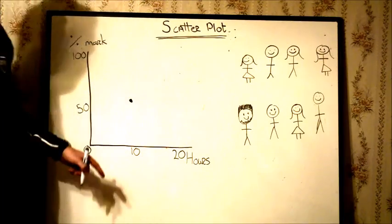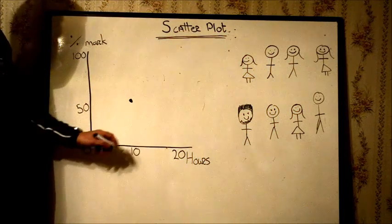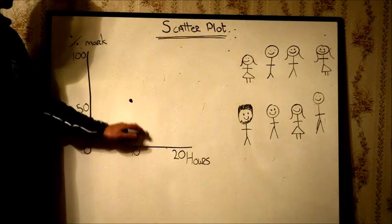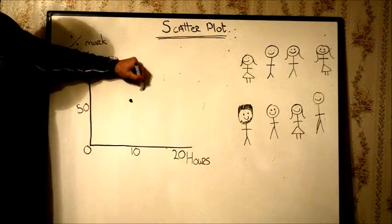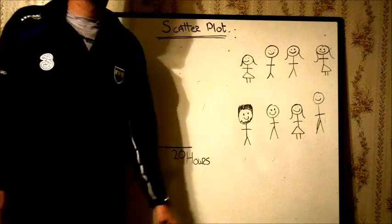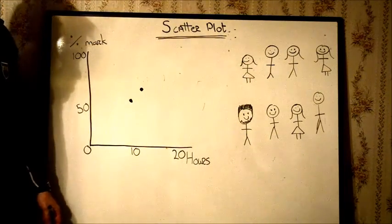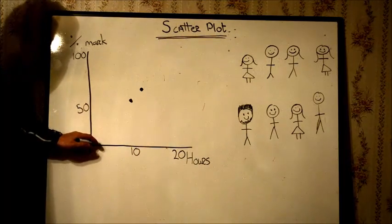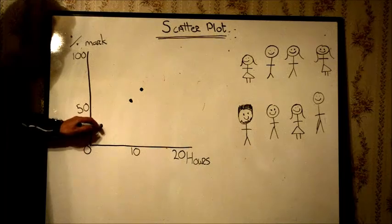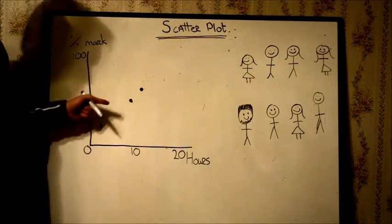If we look at Mitchell, let's say he studied 12 hours, so about here, and he got 65%. Let's say Annie, she might have studied 2 hours because she had a match. So she studied 2 hours but she only got 25%. Now you can start seeing a trend here.